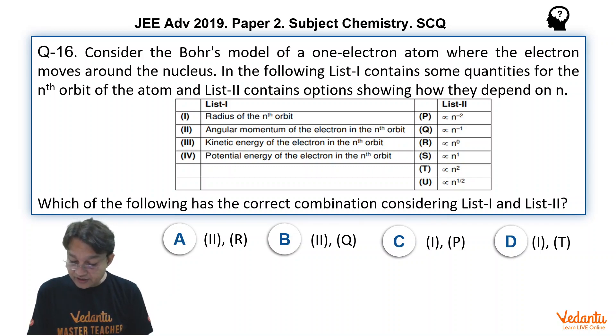Second is matching with R. Second is angular momentum which is R, n raised to the power 0, not possible. B is second option matching with Q. It's also not possible because MVR is directly proportional to N.